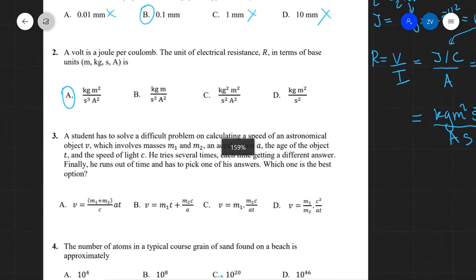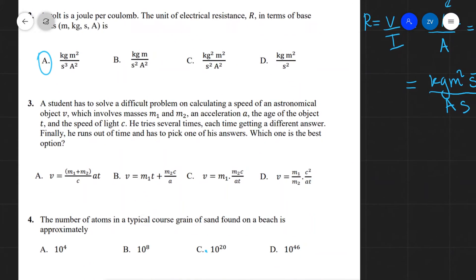So let's go through question number three. We have a student has to solve a difficult problem calculating the speed of an astronomical object v, which involves masses m1 and m2 and an acceleration a. The age of the object t and the speed of light c. He tries several times, each time getting a different answer. Finally, he runs out of time and has to pick one of the answers. Which one is the best option?